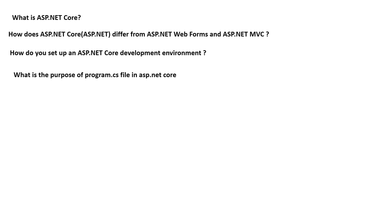The next question: what is the purpose of the program.cs file in ASP.NET Core? The program.cs file is the heart and entry point of your ASP.NET Core application. It contains a WebApplication builder. Using the builder, we create a host, inject dependencies, and also create the app — the WebApplication. Using the app, we add middlewares.